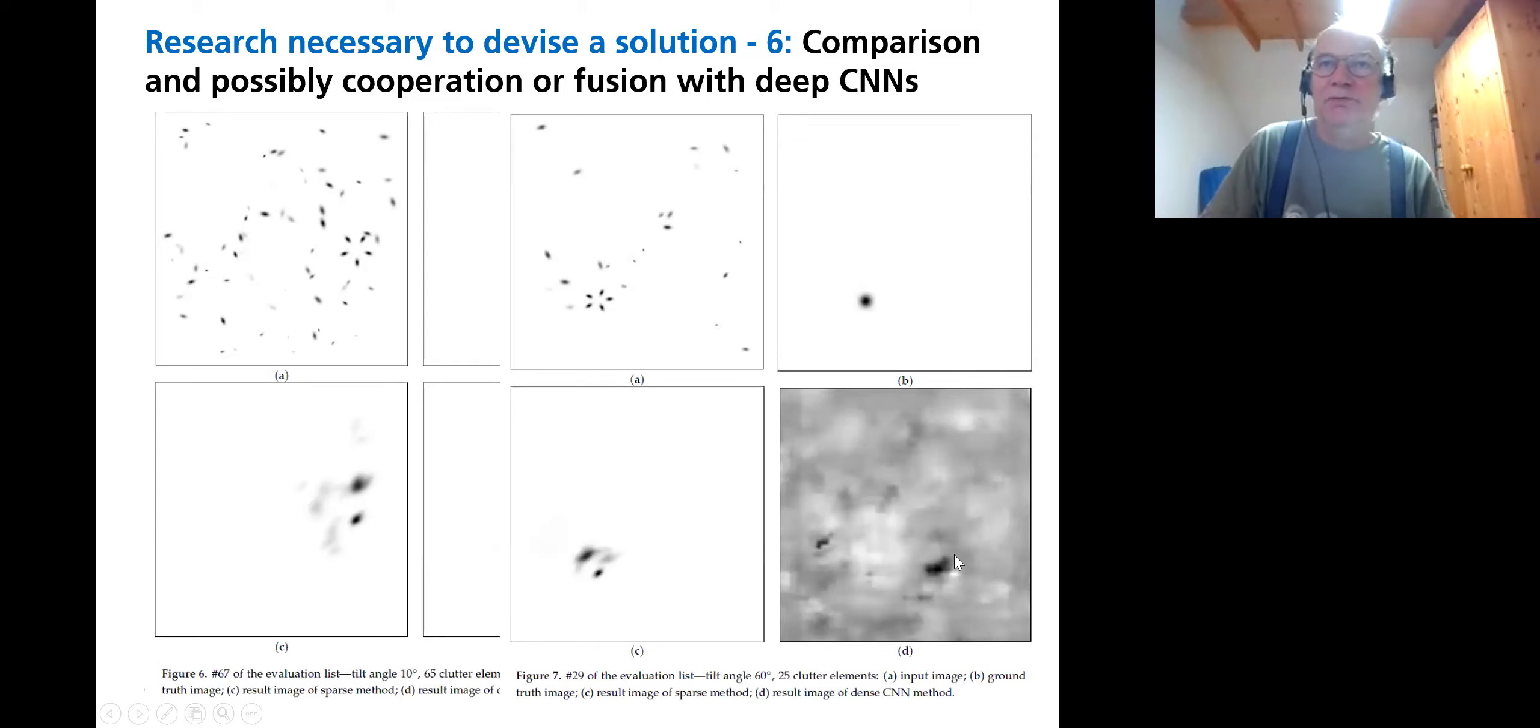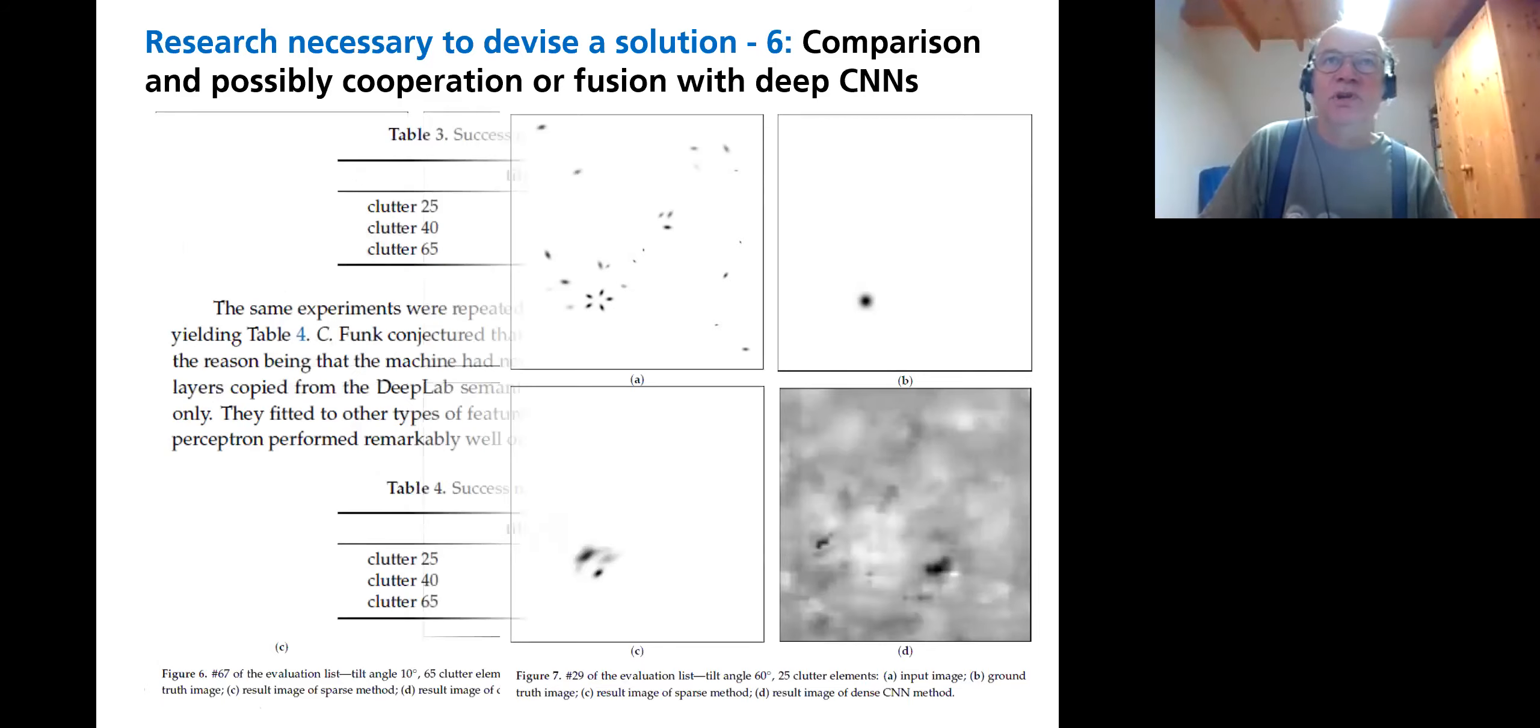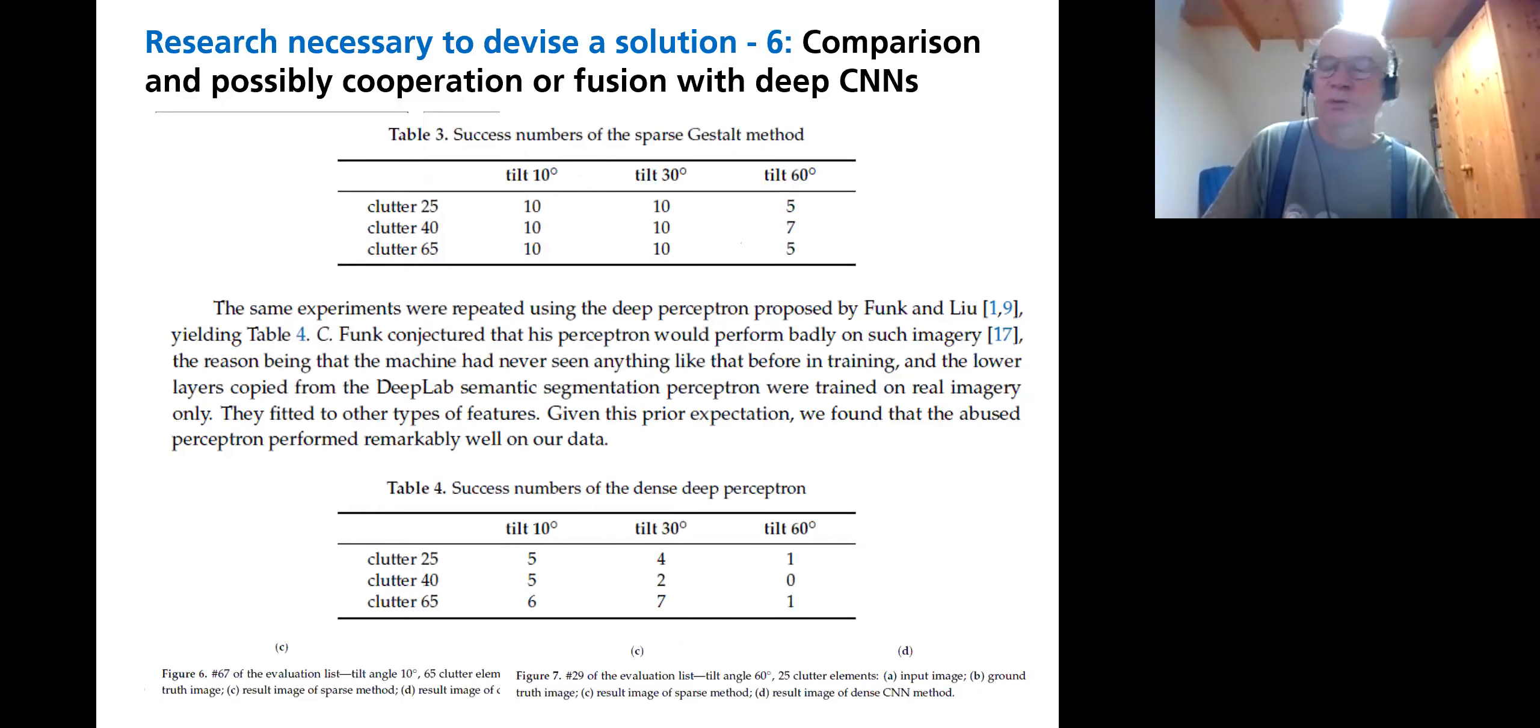The heat map here is actually normalized for maximum heat being displayed as black color. So this perceptron gives no answer on this input. So as Christopher Funk said, that probably the perceptron won't work at all on such data because it has never seen them before, but it does work. It is much better than tossing the dice.